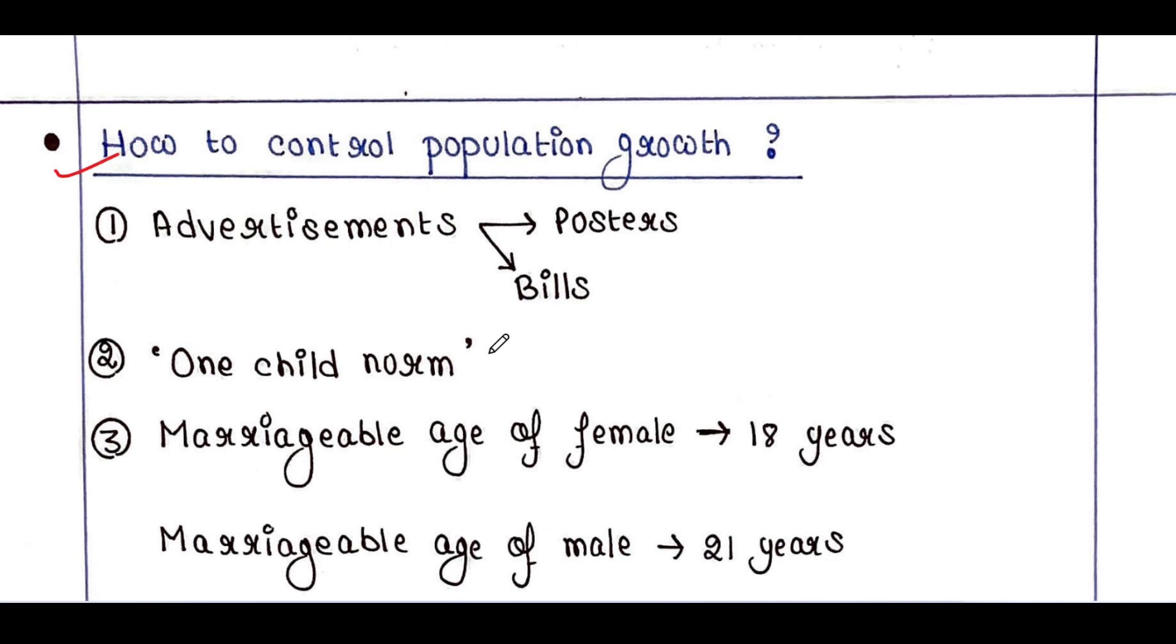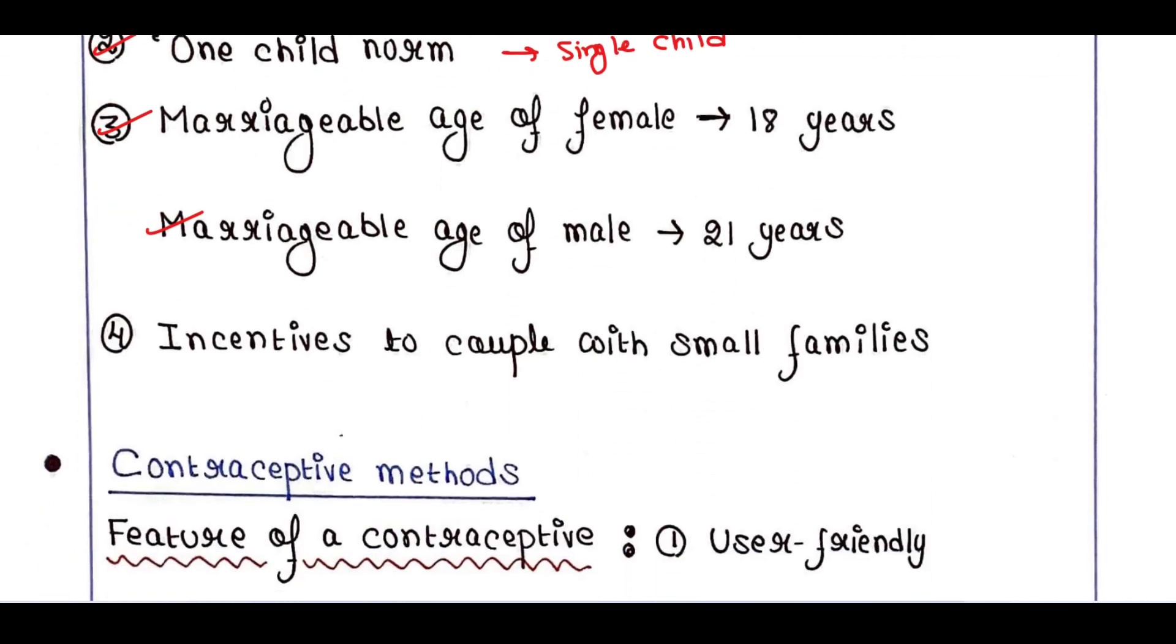So it could be through advertisements. Like we can spread posters, we can spread bills, etc. We can agree with one child norm. That means a couple can commit for a single child only. And the marriageable age of women should not be less than 18, and for male it should not be less than 21 years. The couple having small families, like only one or two children, are given incentives.